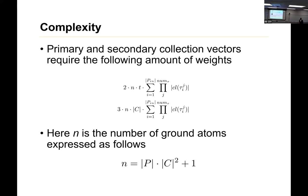They talk in the paper about primary and secondary collection vectors, and so you are summing over the number of clauses for each template for each target predicates. One set of vectors you're multiplying by 2·n·t, two times the number of ground data times the number of inference steps, and here is 3·n·|C|, three times the number of ground atoms times the number of constants.